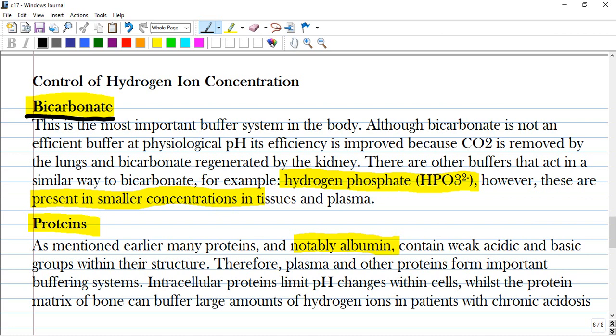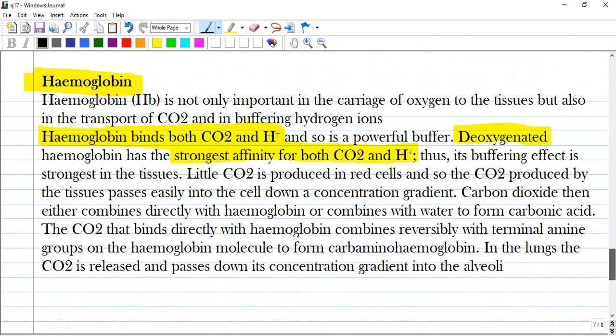So bicarbonate proteins especially albumin and hemoglobin is not only important in the carriage of oxygen but also in buffering hydrogen ions. Hemoglobin binds both CO2 and hydrogen.